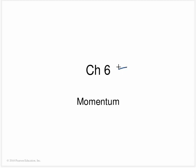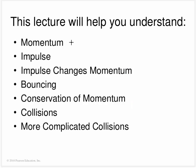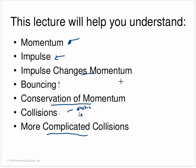This will be the lecture for Chapter 6, and we'll be talking about momentum. First, I'll define what momentum is and talk about how we can change momentum using an impulse. We'll talk about a special case involving bouncing, and about momentum as a conserved quantity. We'll cover how that impacts collisions, including elastic collisions, inelastic collisions, and briefly mention some more complicated collisions.